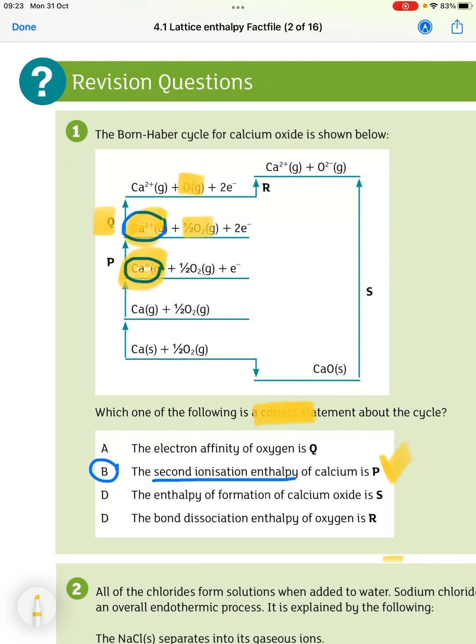The enthalpy of formation of calcium oxide is S. Well, clearly it's not because we're going from calcium oxide to the ions. And then the bond dissociation enthalpy of oxygen is R. Again, oxygen has already kind of dissociated here in Q. So that's incorrect. So the answer is B.